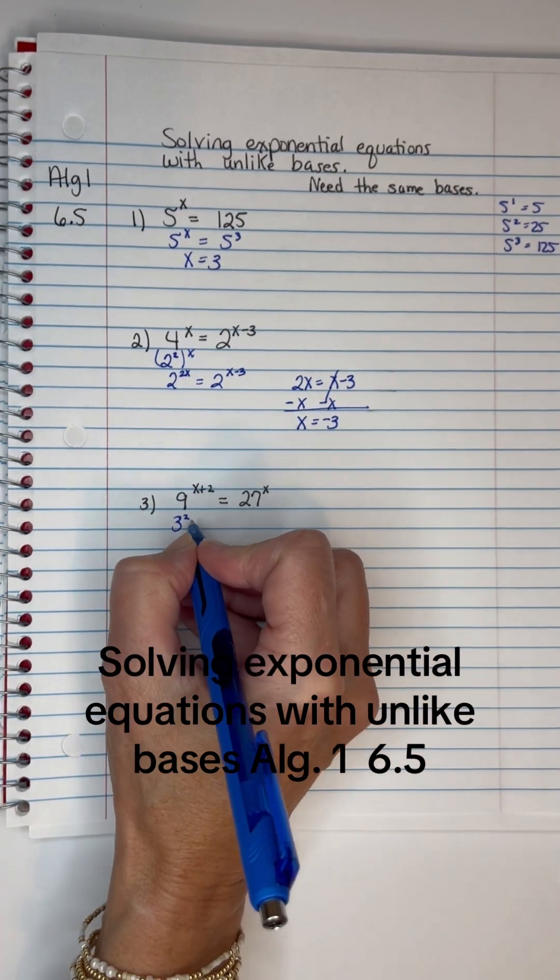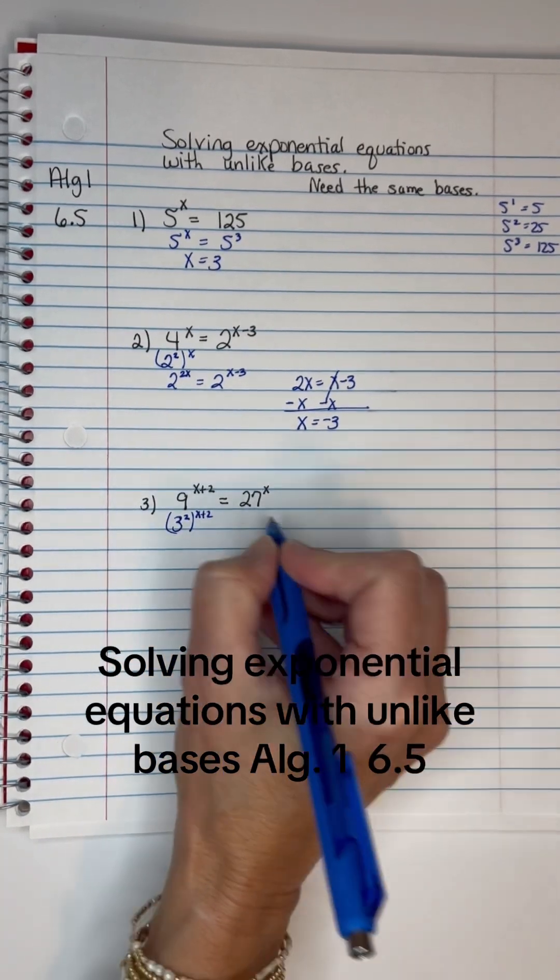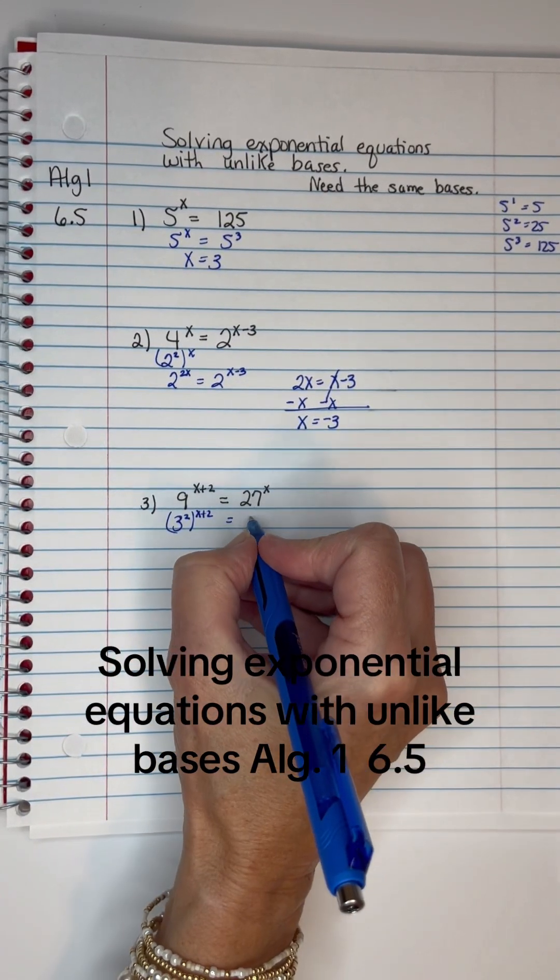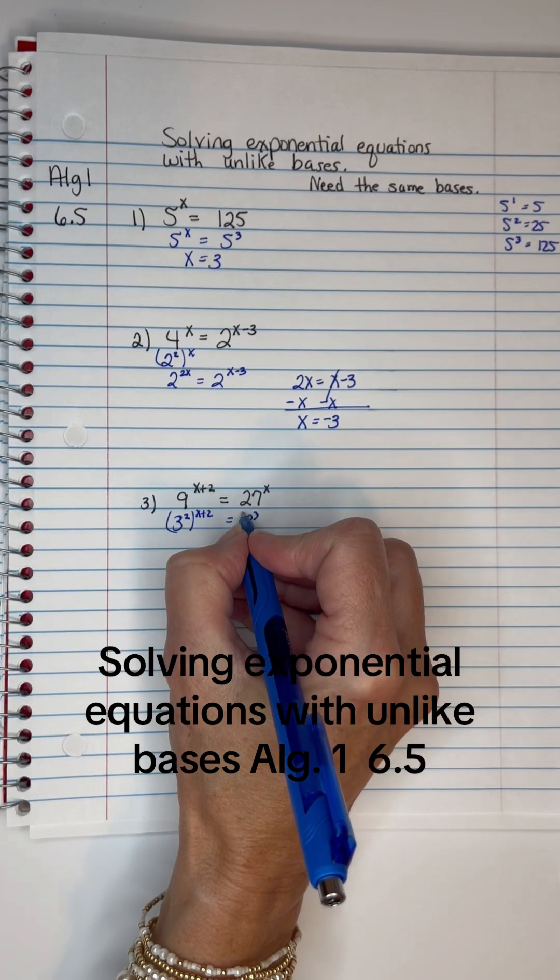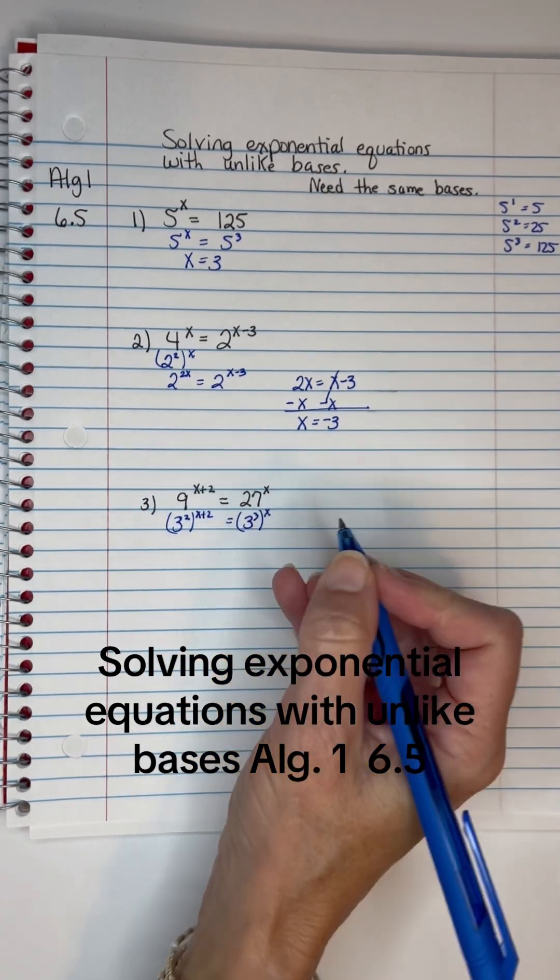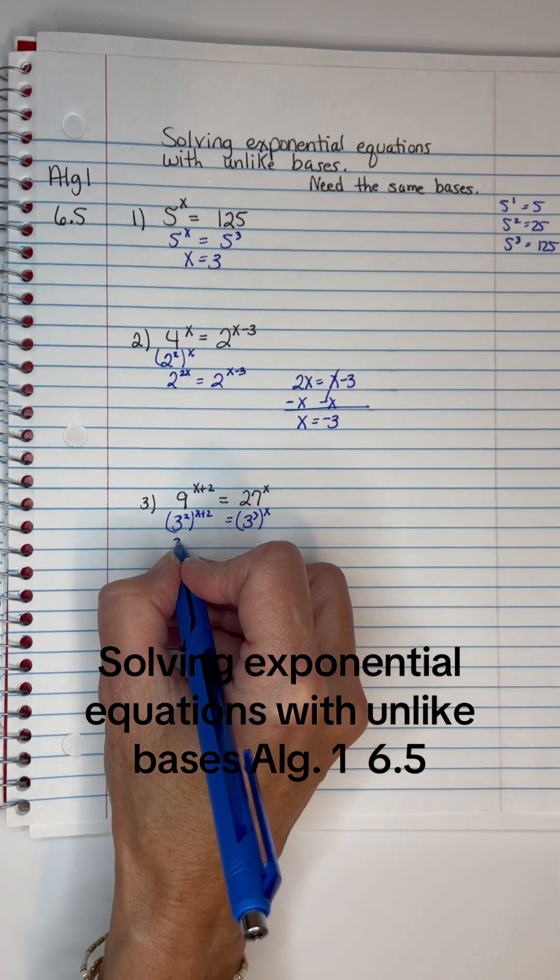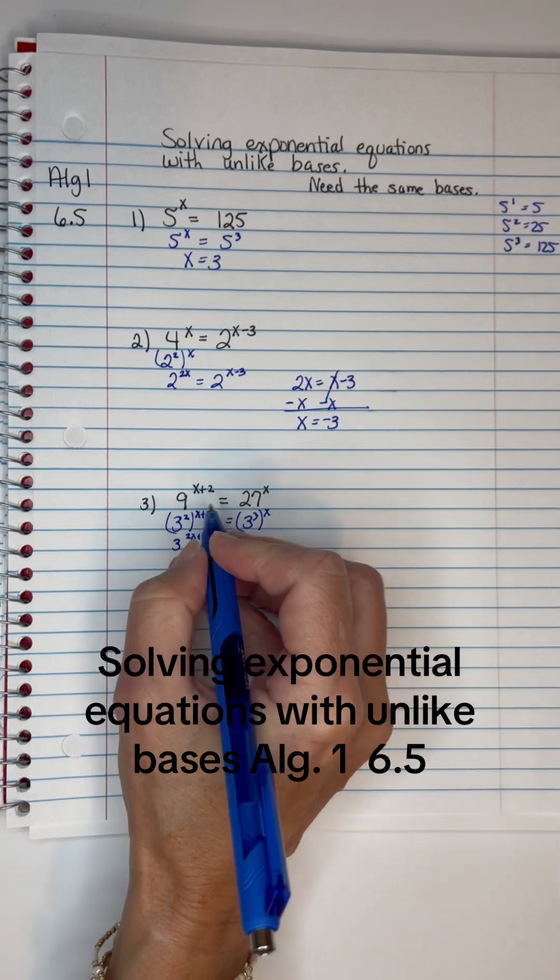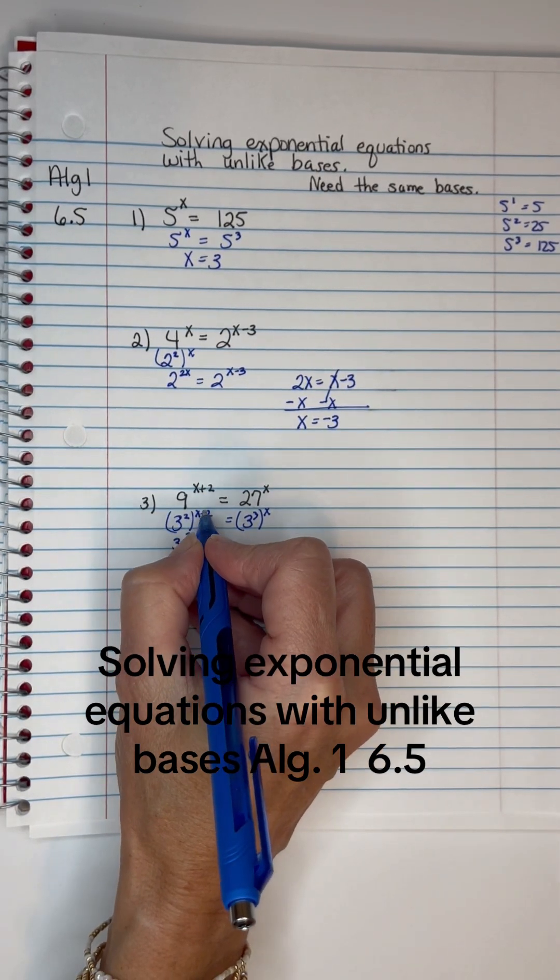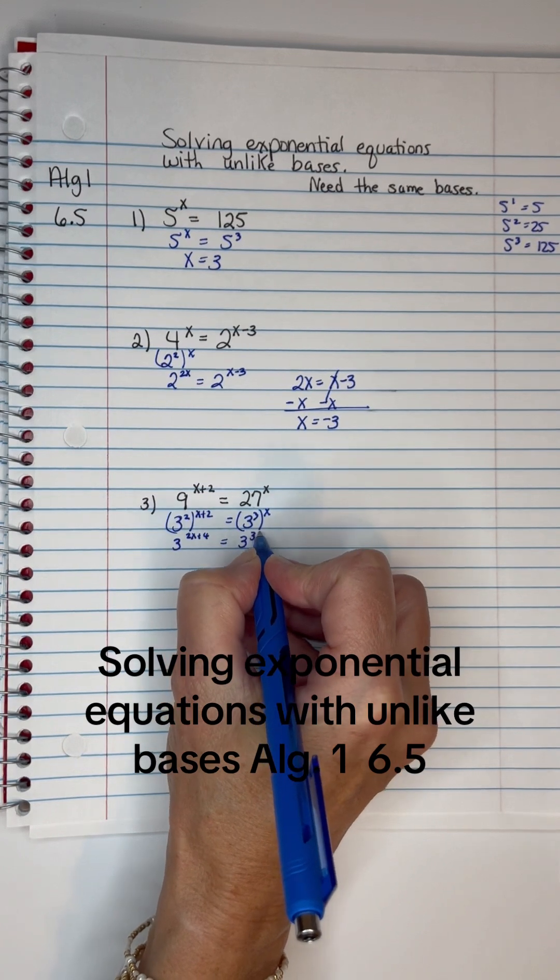9 is 3 squared, and that can change to 3 squared to the X plus 2. And on this one, 27 is 3 cubed. So I can raise a power to a power by multiplying that. So that's 3 – it's like distribution. 2X plus 4 – 2 times X is 2X, 2 times 2 is 4 – equals 3 to the 3X.